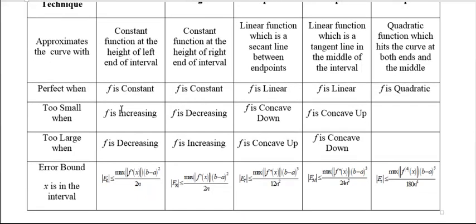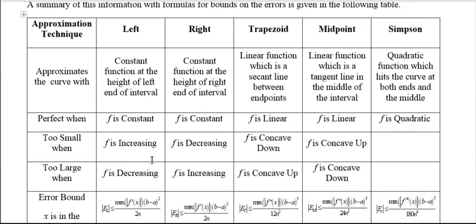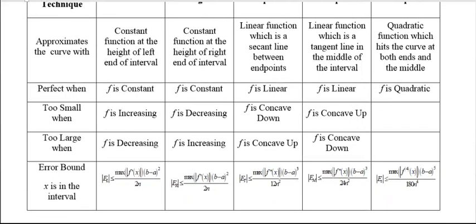So the left is too small when the function is increasing and too large when it's decreasing. And the right is exactly backwards from that. That's why the average of the two is typically a better thing. Trapezoid rule is perfect with linear, too small when the function is concave down, too large when it's concave up. And the midpoint rule is exactly backwards for that. Again, averaging those will come up with something better. And just a quick look at these error estimates here.